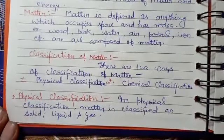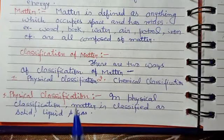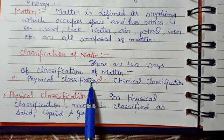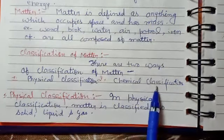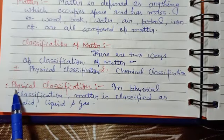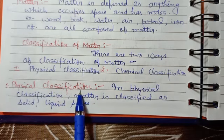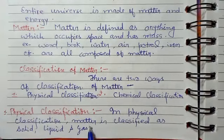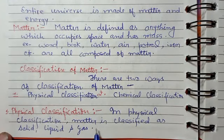Classification of matter. There are two ways of classification of matter: first, physical classification; second, chemical classification. In physical classification, matter is classified as solid, liquid, and gas.